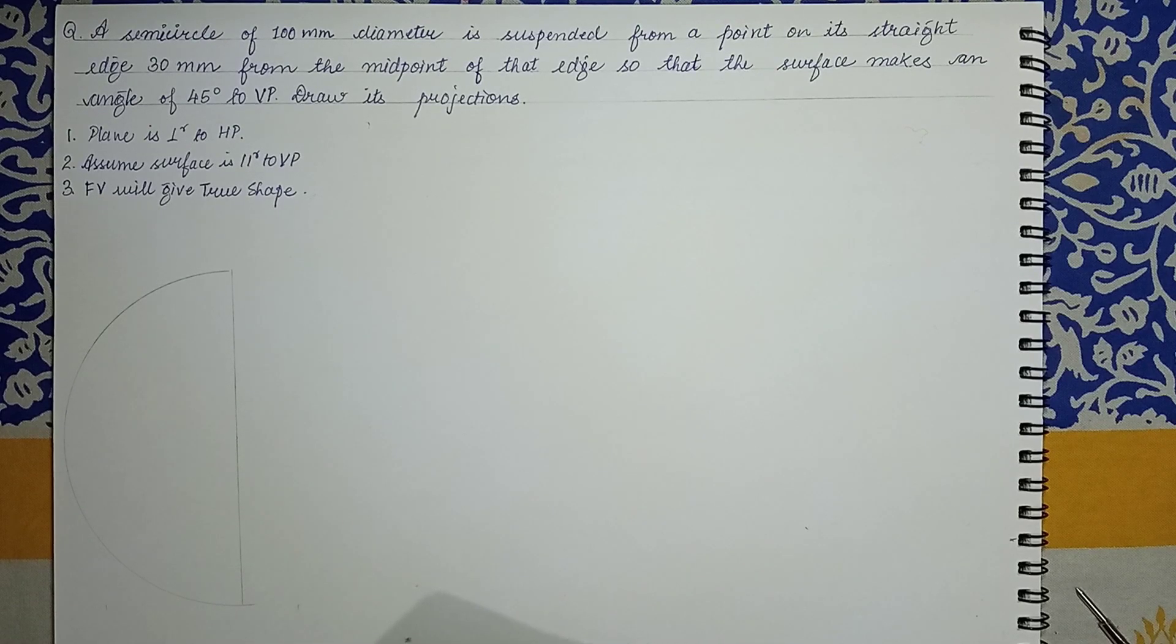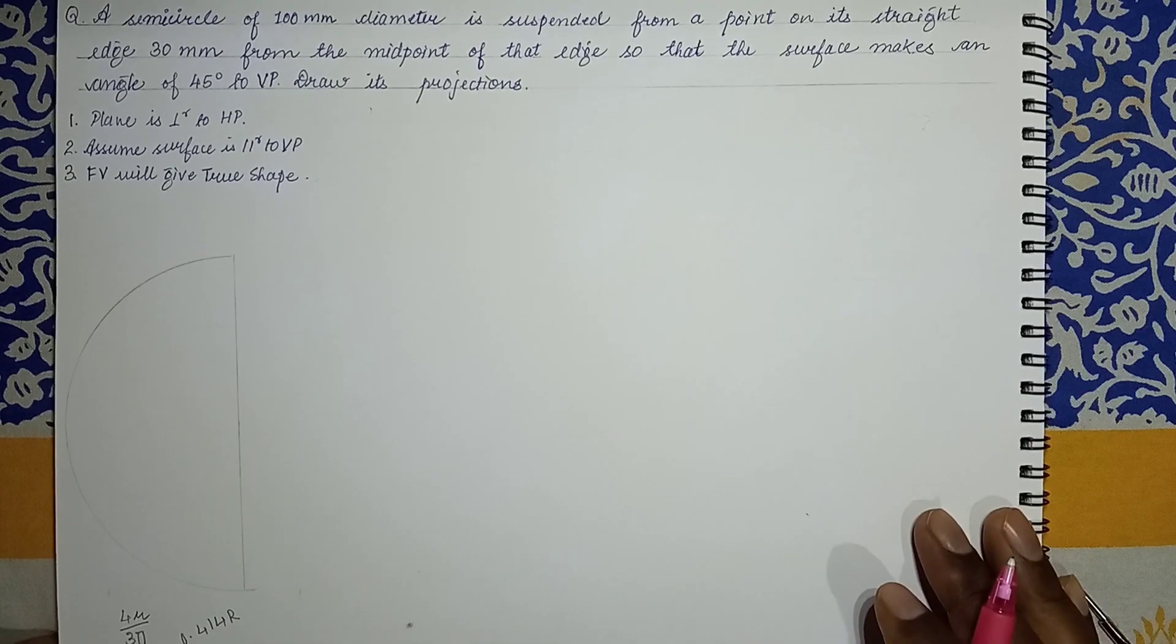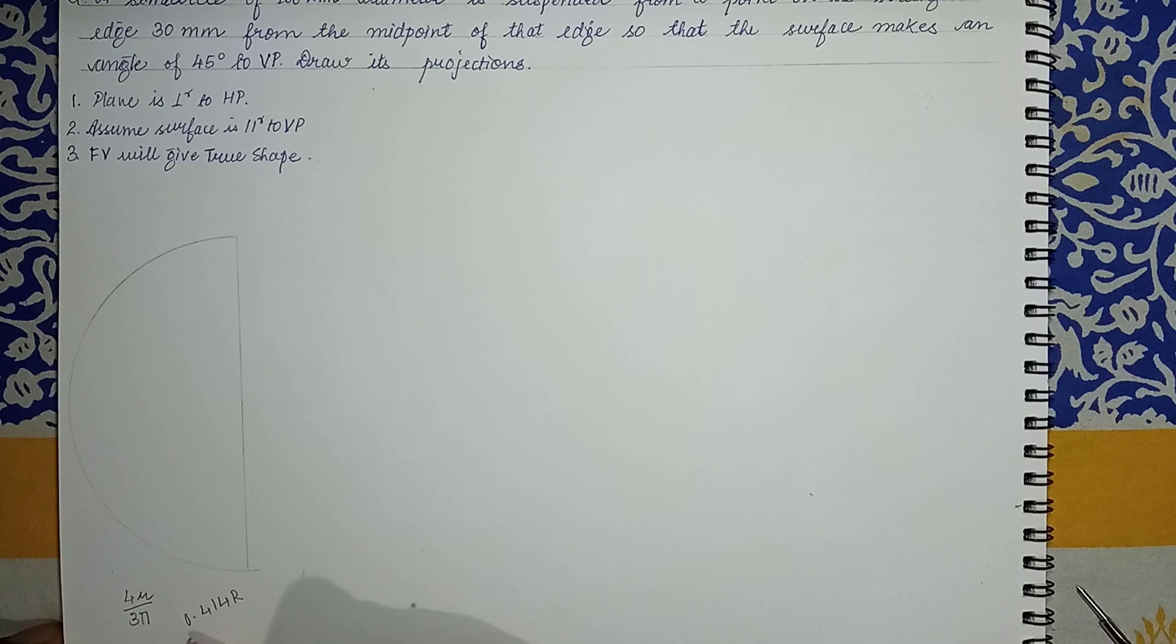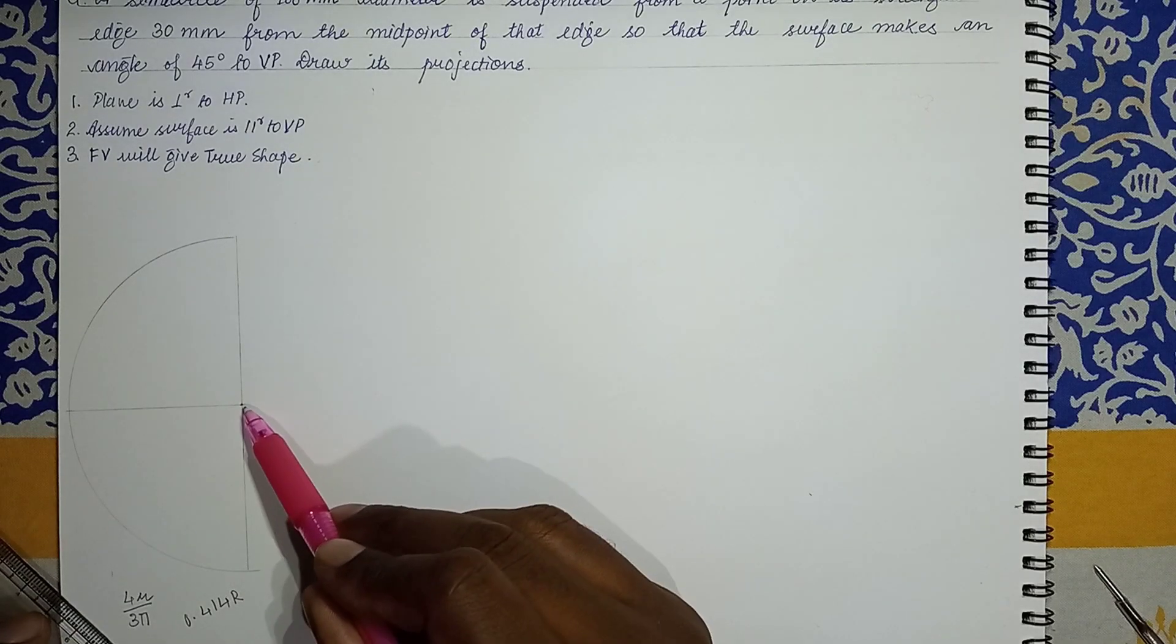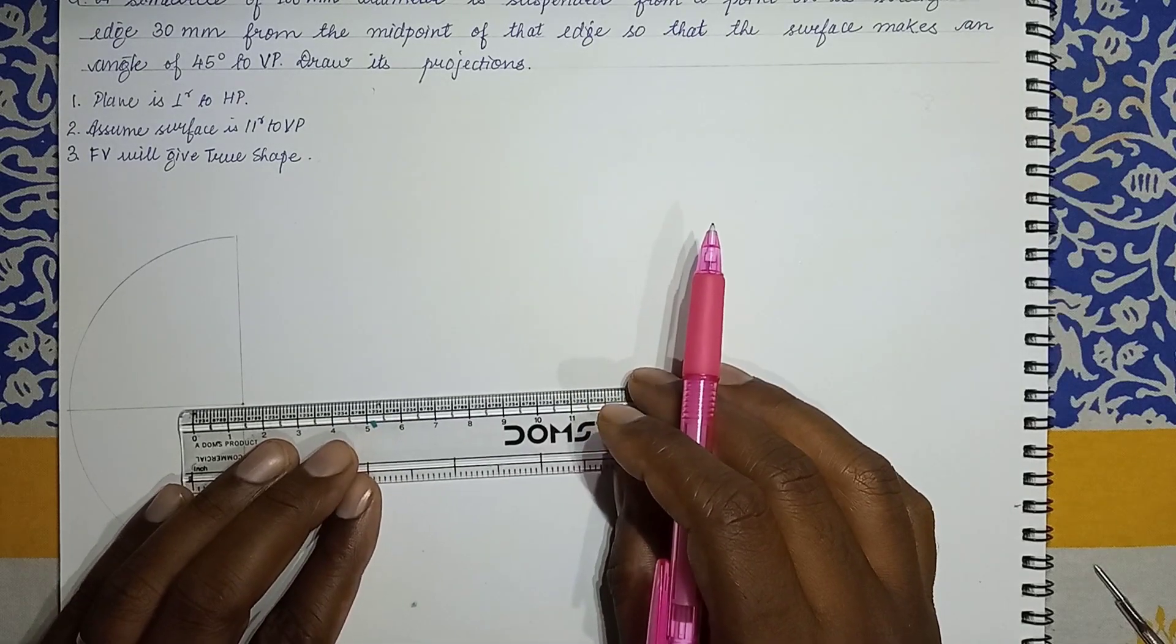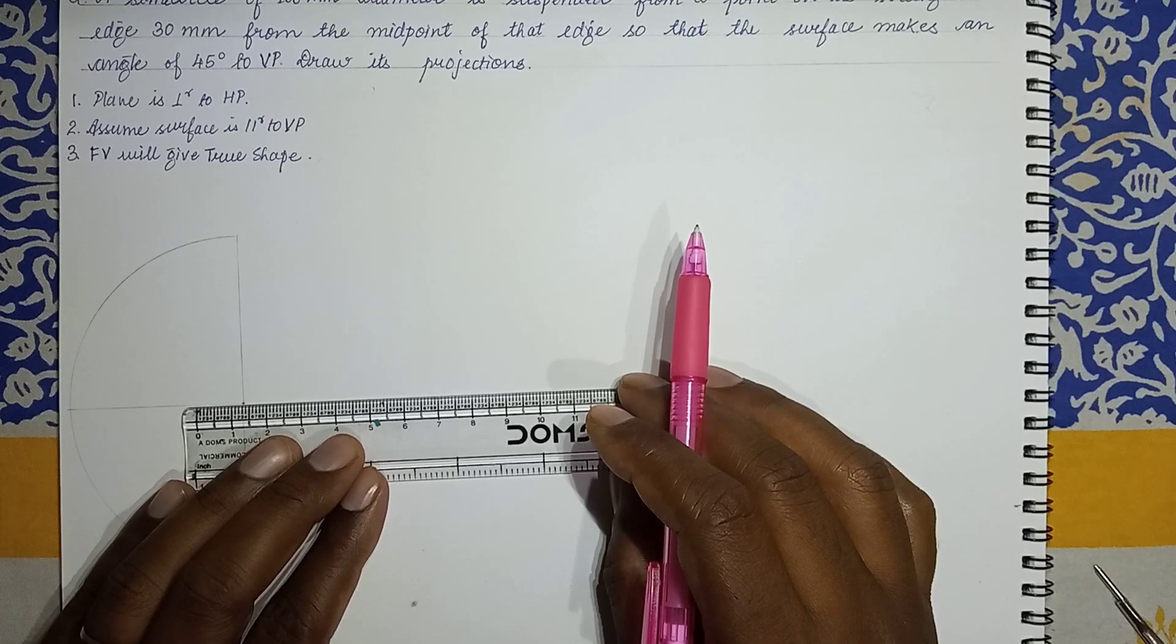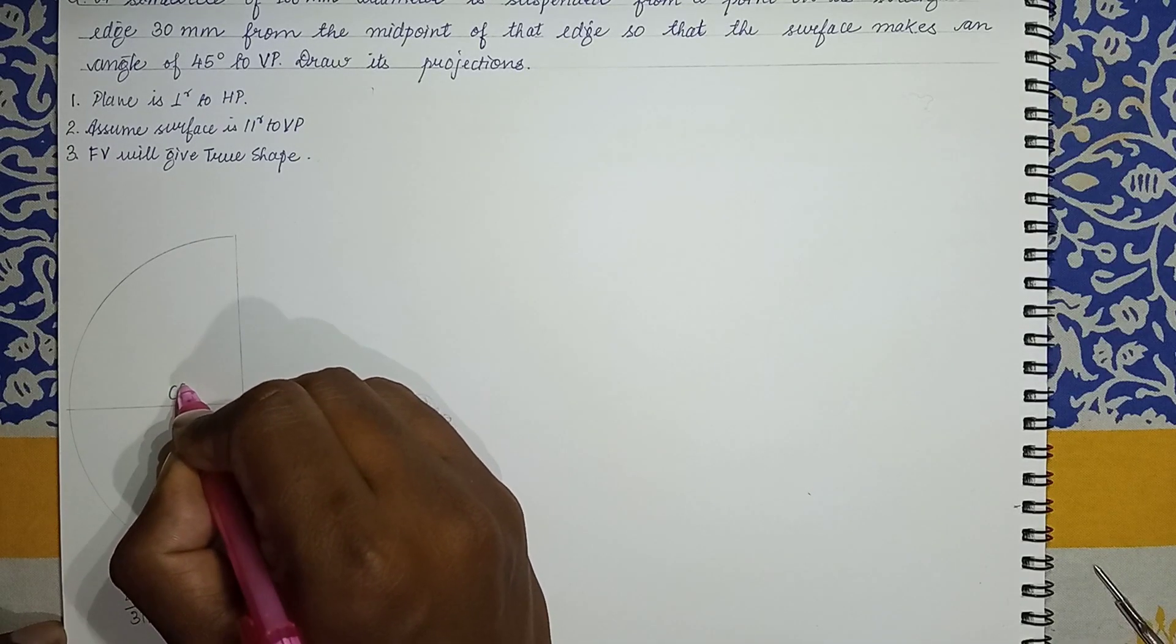Now as per the condition, we have to find center of gravity of the semicircle. We have center of gravity of semicircle as 4r by 3π which comes around as 0.424 of r. So this is the basic condition 4r by 3π, which comes around this value. We mark this distance on the central line, it comes around 21.3. That is the CG value, so we can see it is the center of gravity.